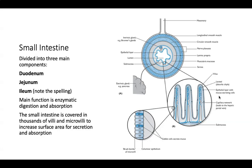The small intestine is divided into three main components: the duodenum, the jejunum, and the ileum — spelled I-L-E-U-M, not to be confused with the ilium of the pelvis, spelled I-L-I-U-M. The main function of the small intestine is enzymatic digestion and absorption of nutrients. The small intestine is covered in thousands of villi and microvilli to increase surface area for secretion and absorption.